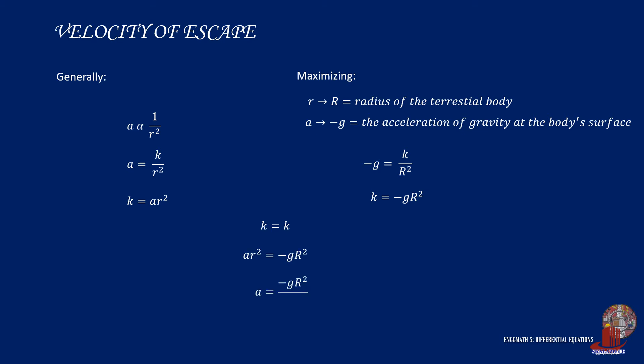And by equating k, we can say that a is equal to negative g multiplied by capital R squared all over r squared.